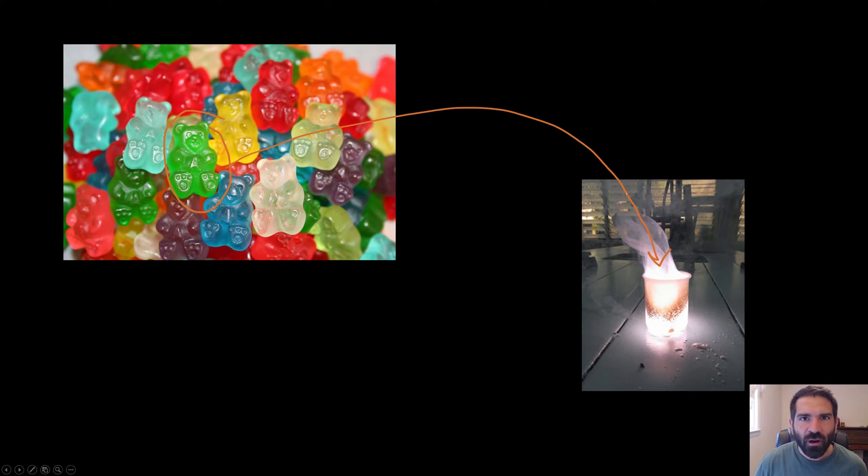All the sugar in the gummy bear incinerates in a very short amount of time. A huge amount of heat and light comes off of the gummy bear. You're releasing its stored energy. You also get some waste products. You get some water vapor and you also get some carbon dioxide.